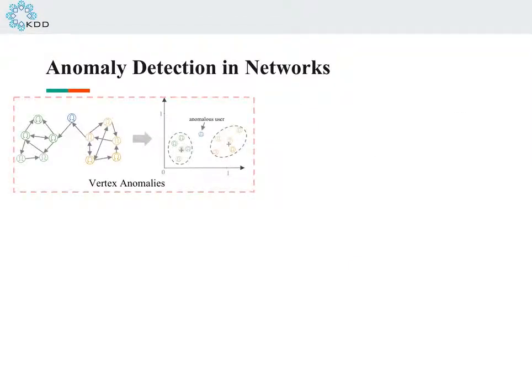Recently, network embedding has proven to be a powerful tool in learning low-dimensional representations of vertices in networks that can capture and preserve the network structure, which makes it particularly suitable for anomaly detection tasks.